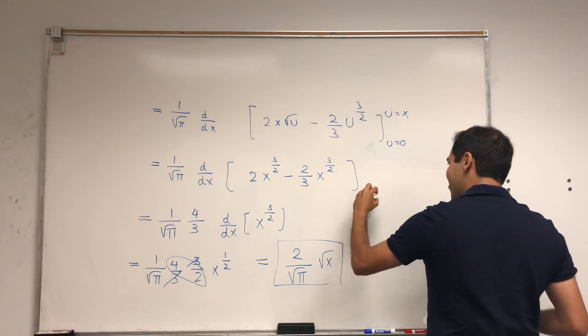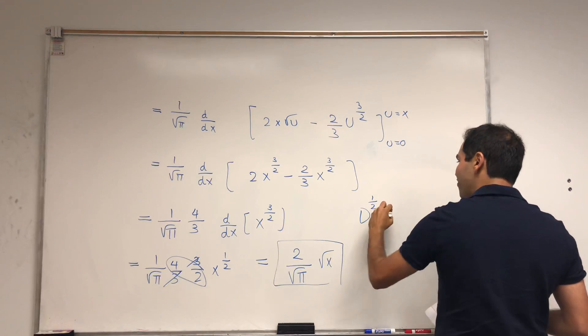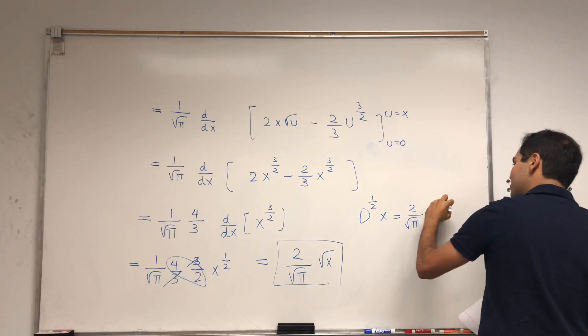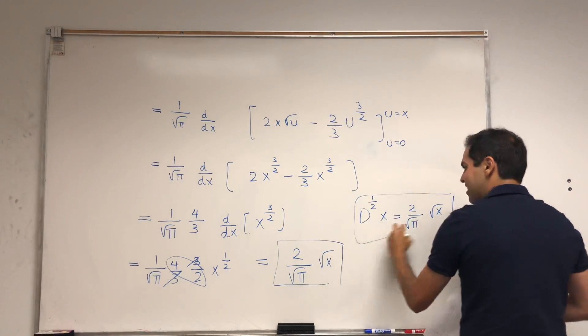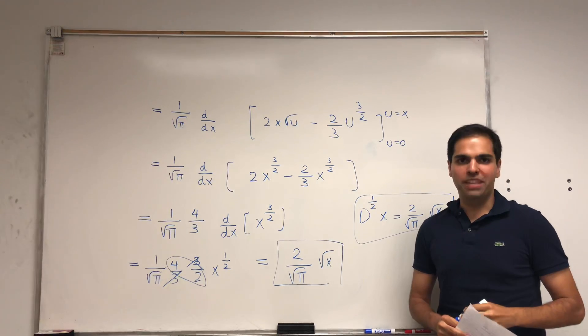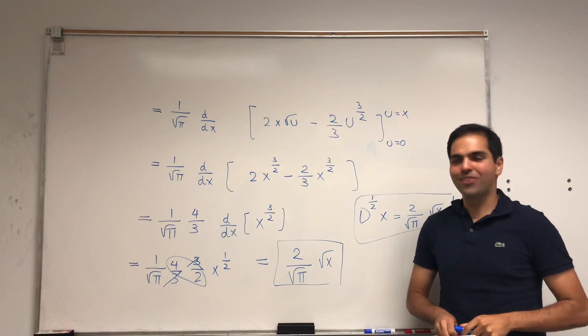So in other words, formally, with the definition, the half derivative of x is two over square root of pi, square root of x, which is exactly the same formula I obtained in the half derivative video.